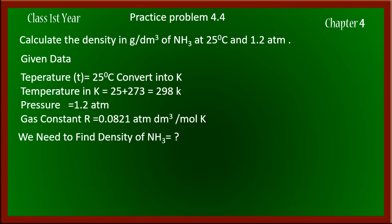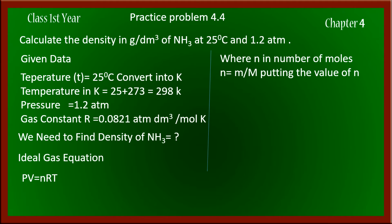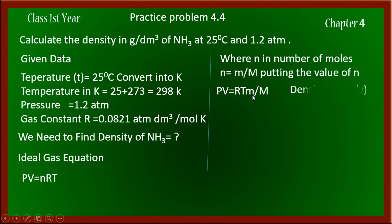We need to find the density of ammonia gas under these conditions. We will take the ideal gas equation PV = nRT and modify it to give us the density. In this equation, n is the number of moles, which can be calculated as mass in grams (m) divided by molar mass (M). Substituting this into the ideal gas equation gives us a modified form.